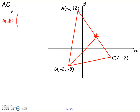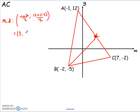The midpoint of AC is: negative 1 plus 7 divided by 2, and 12 plus negative 2 divided by 2. Negative 1 plus 7 is 6, divided by 2 gives 3. 12 plus negative 2 is 10, divide by 2 and you get 5. So my midpoint is (3, 5).